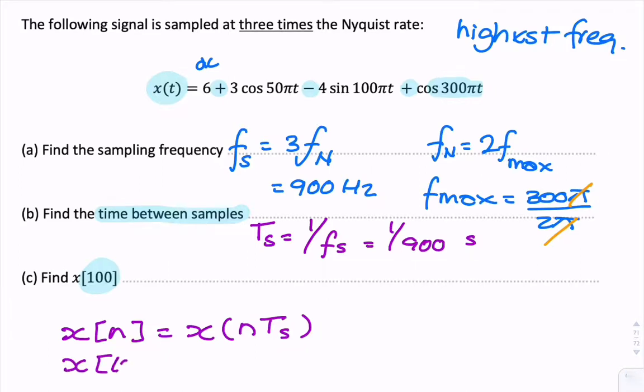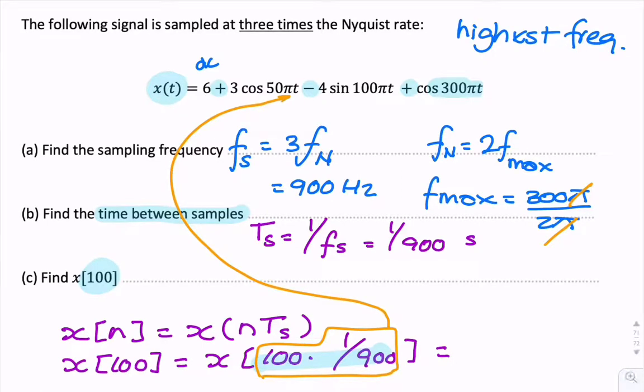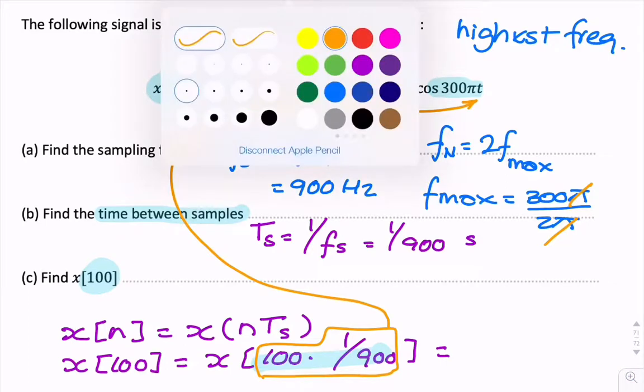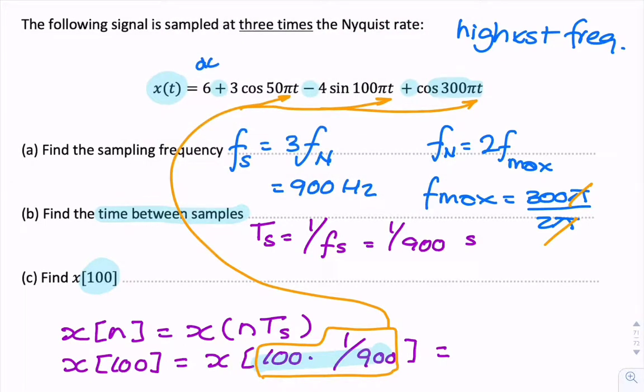In that case, X of 100 is X of 100 times 1 over 900. And then you calculate that and then you put that number in the calculator and substitute for t once, two times, three times. And then that will give you the answer there.